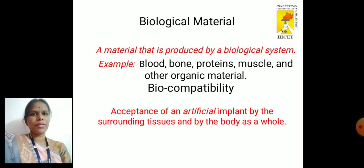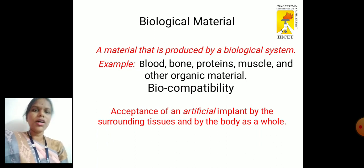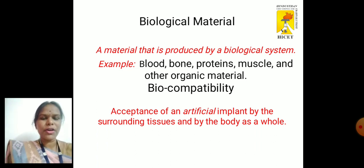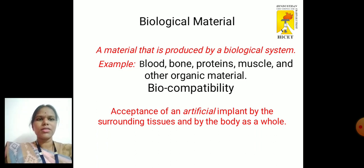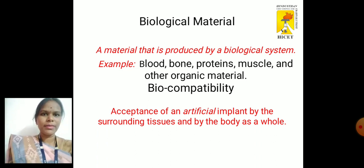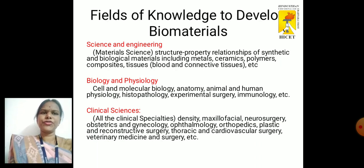There is an important difference between a biomaterial and a biological material. A biomaterial is a material used to make devices that replace parts of the human body or function within living systems. A biological material is a material produced by biological systems — for example, blood, bone, proteins, and muscles. Biocompatibility is the acceptance of an artificial implant by the surrounding tissues and the body.